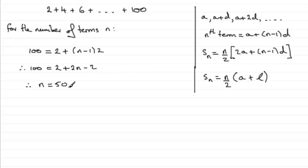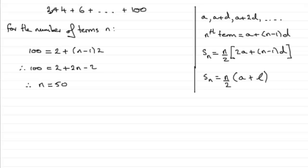That leaves us with 2n equals 100, so n must equal 50 — there are 50 terms. That was pretty obvious for this particular one, but this method will prove useful in other problems, including another part of this question.